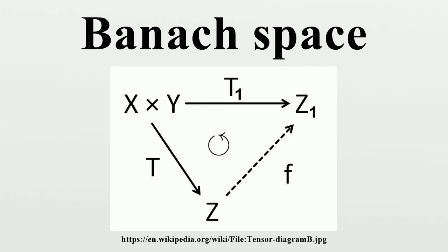A normed space X is a Banach space if and only if each absolutely convergent series in X converges. Completeness of a normed space is preserved if the given norm is replaced by an equivalent one. All norms on a finite-dimensional vector space are equivalent, and every finite-dimensional normed space over ℝ or ℂ is a Banach space.